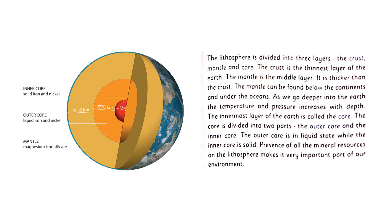As you go deeper into the Earth — from crust to mantle to core — the temperature and the pressure will increase with depth. So the temperature and pressure is less on the crust. As you go to the mantle it increases, and at the core it is the highest. The innermost layer of the Earth is called the core. The core is divided into two parts: outer core and inner core.